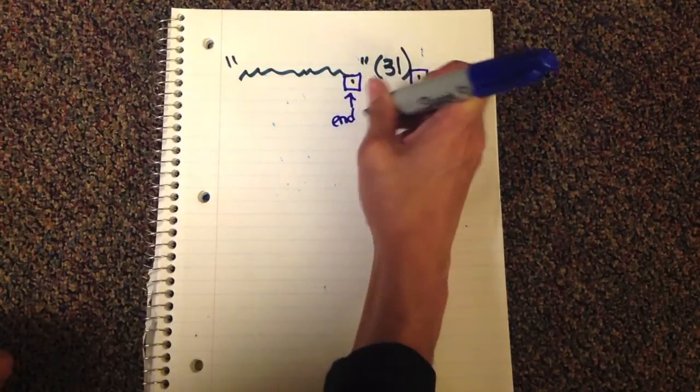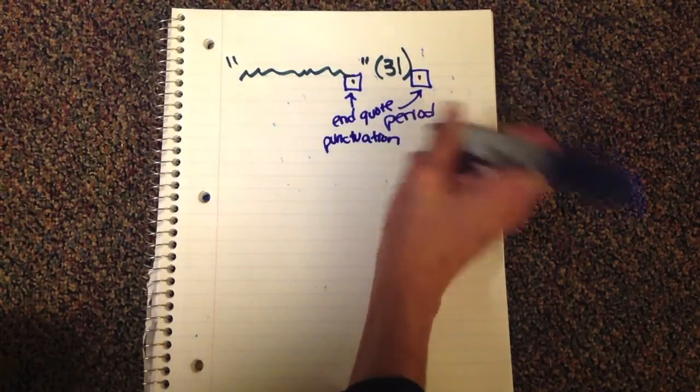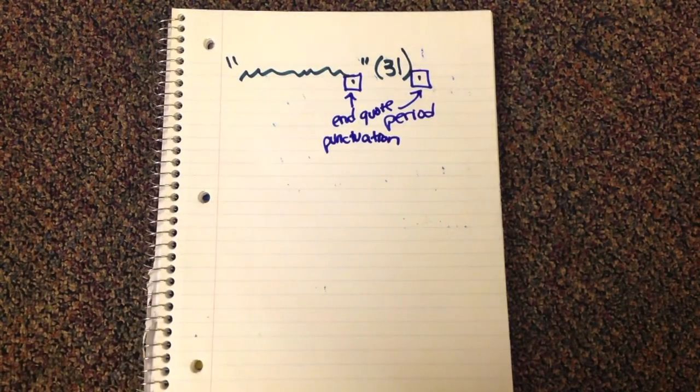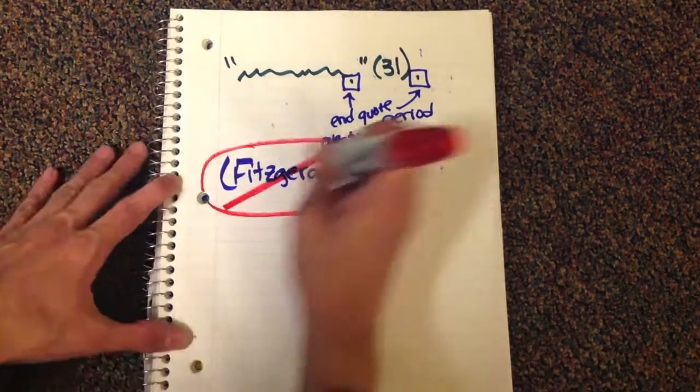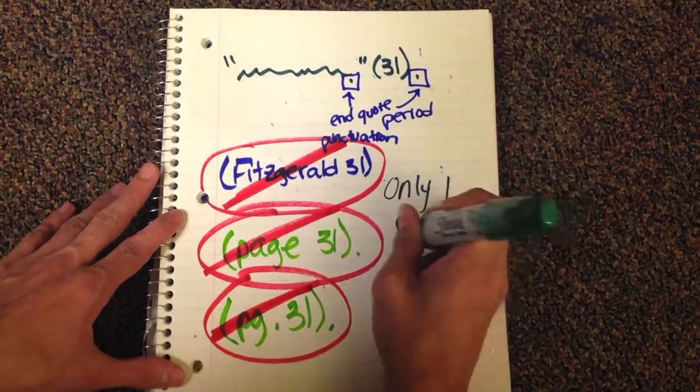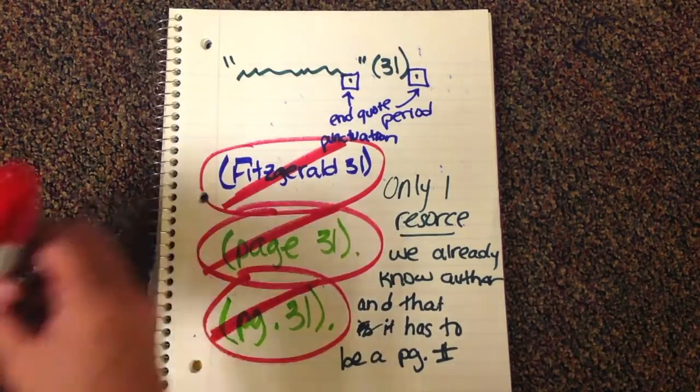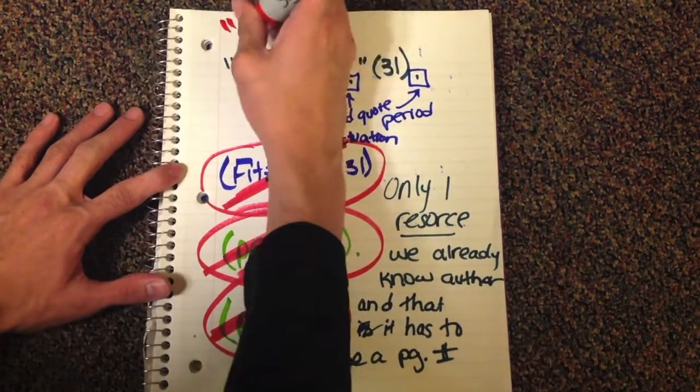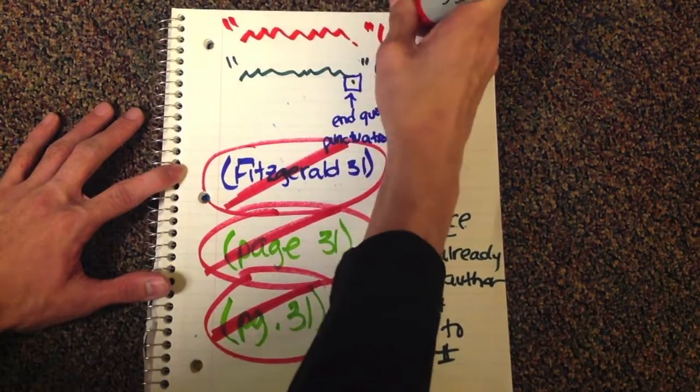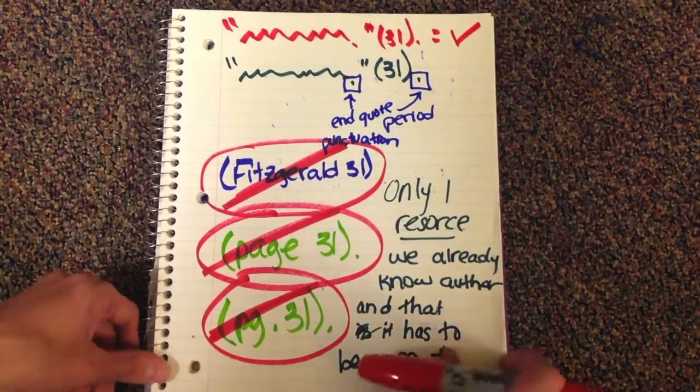So I'm going to write, after the quote, I'm going to write parentheses 31, period. Okay, I am not going to put Fitzgerald 31 in parentheses, I'm not going to put page 31, PG 31, I'm going to just put the number, blah blah blah, quote, number, period. That's all you put. And then in parentheses is the number.